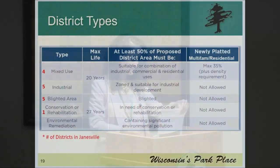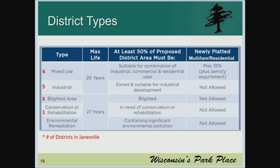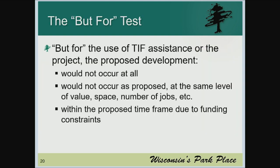There are several different types of tax increment districts. Mixed use and industrial are 20 years; blighted, environmental, and rehab districts are 27 years. The numbers in red on the far left of the screen are how many districts we have in each category within the City of Janesville. TID 1042, which is on tonight's agenda, would be an additional blighted TID, making our total 16 active TIDs. The 'but for' test is used to show that if it weren't for this tool, a project would not occur at all, not at the level proposed, or not within the proposed time frame.